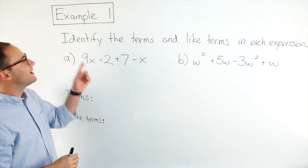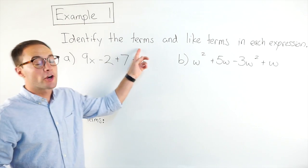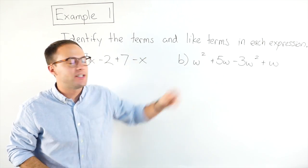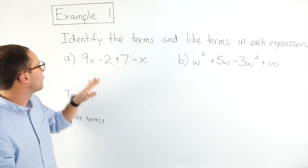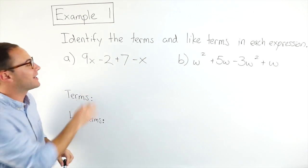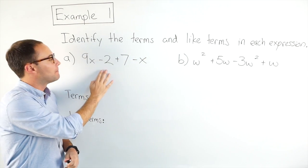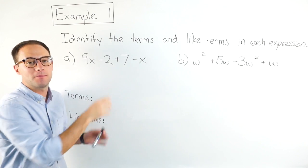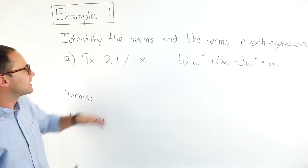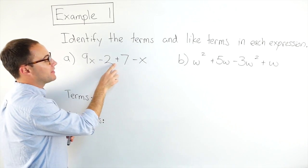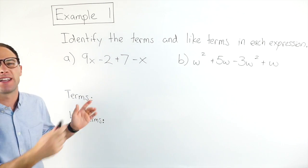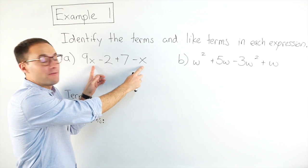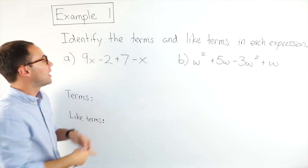Example one: identify the terms and the like terms in each expression. For part a, we've got 9x minus 2 plus 7 minus x. This is an algebraic expression because we have variables.